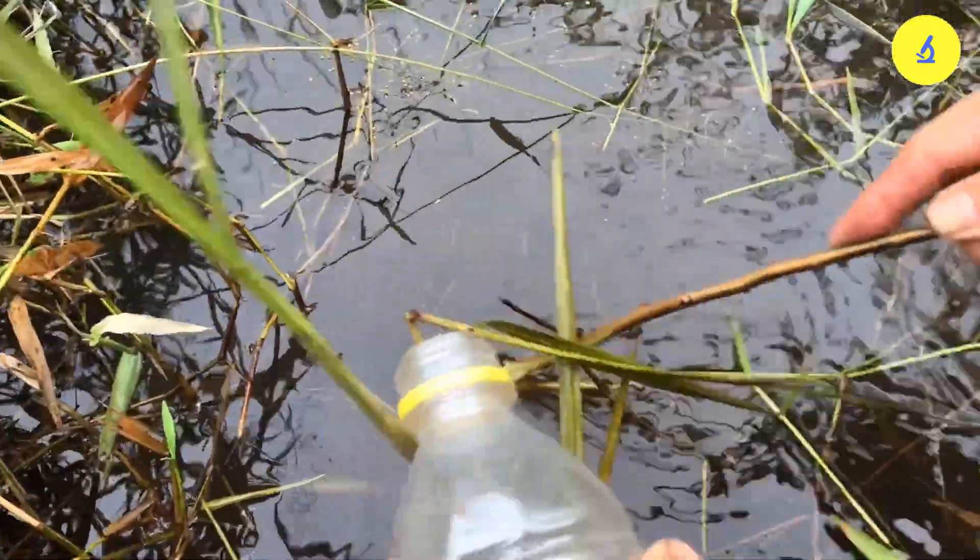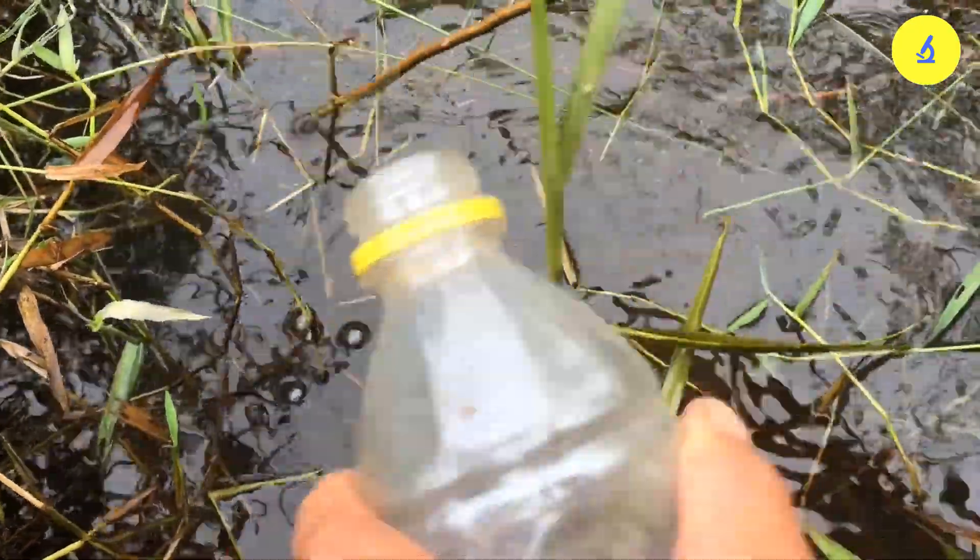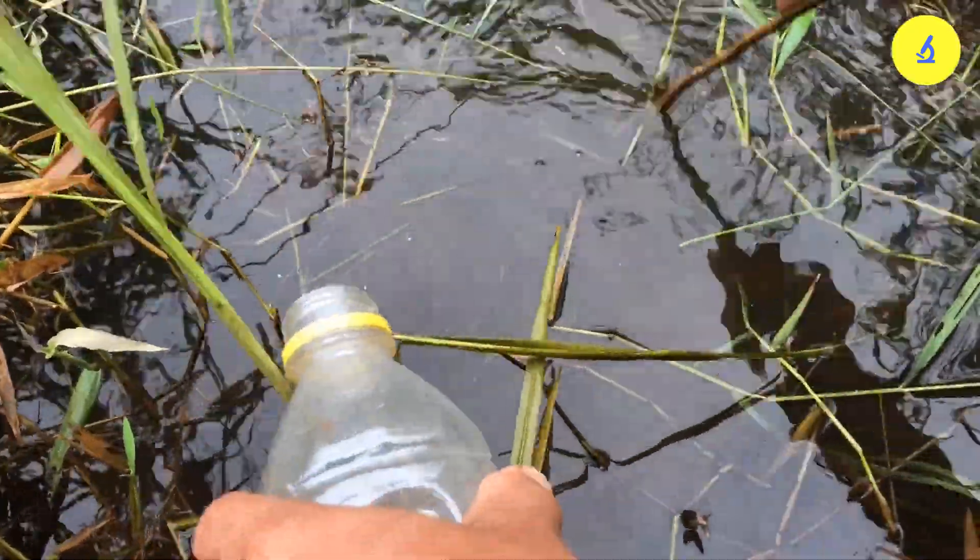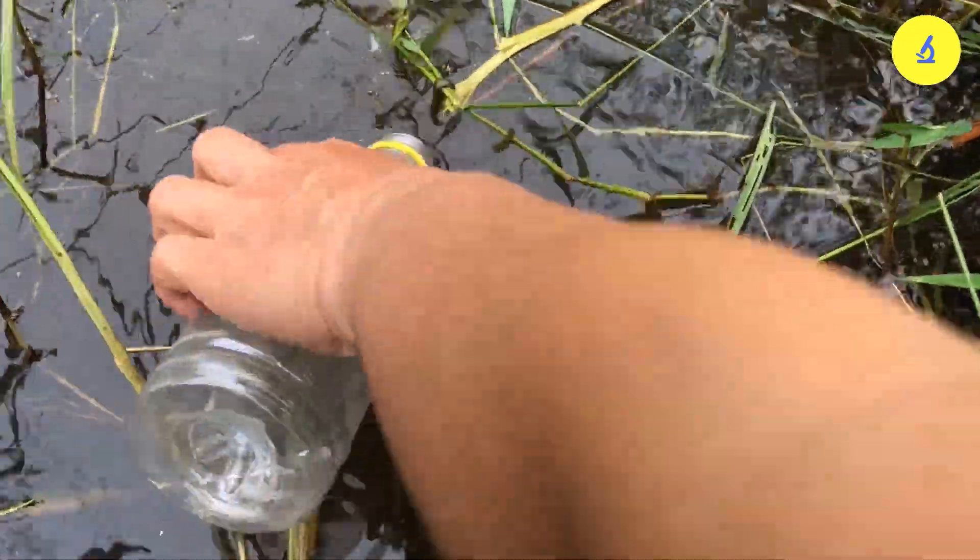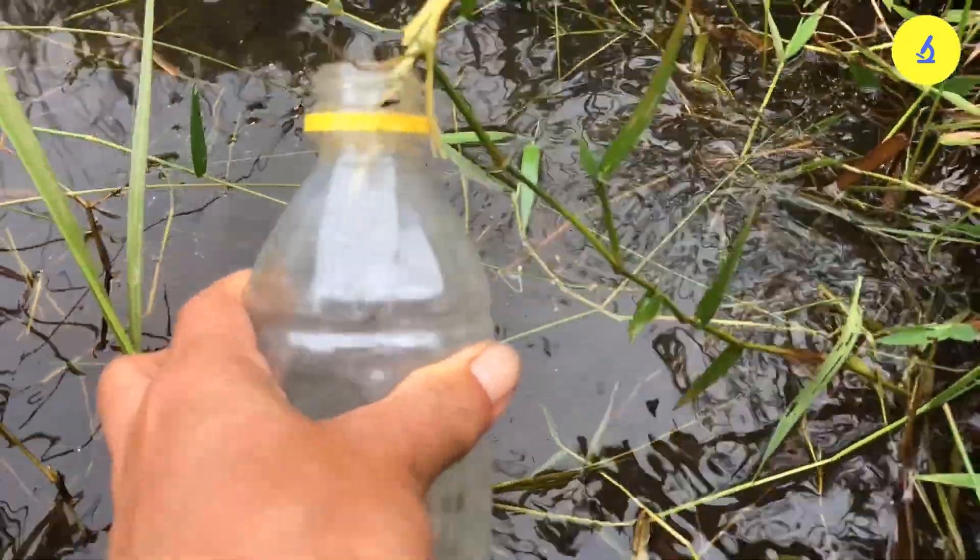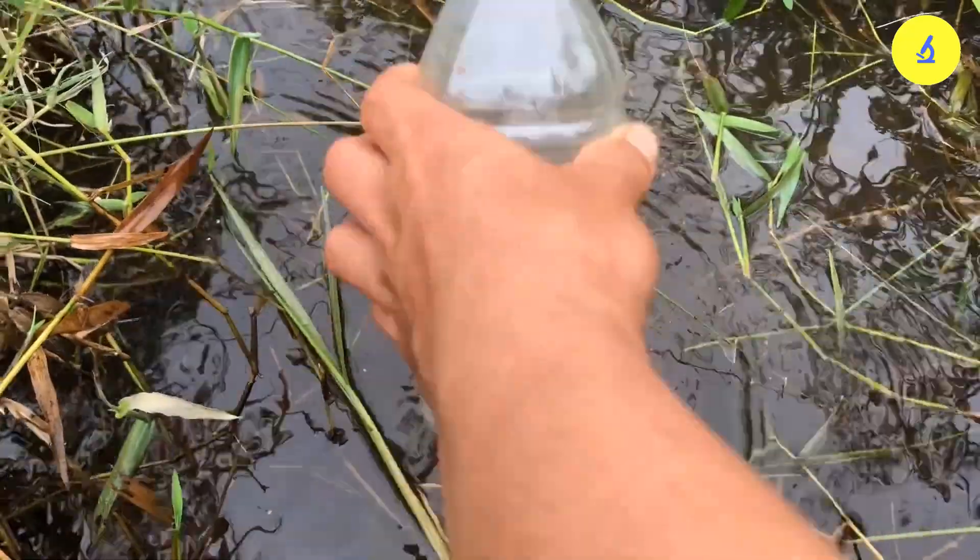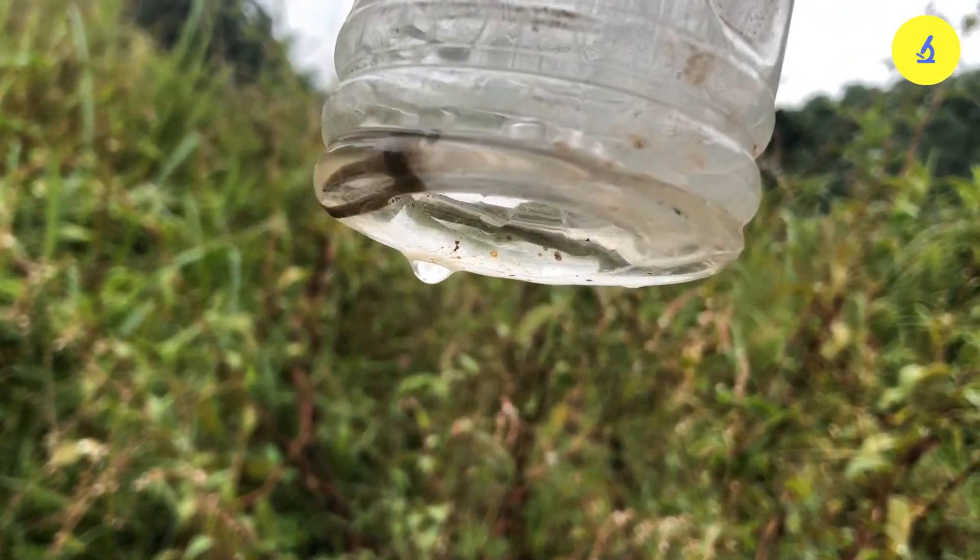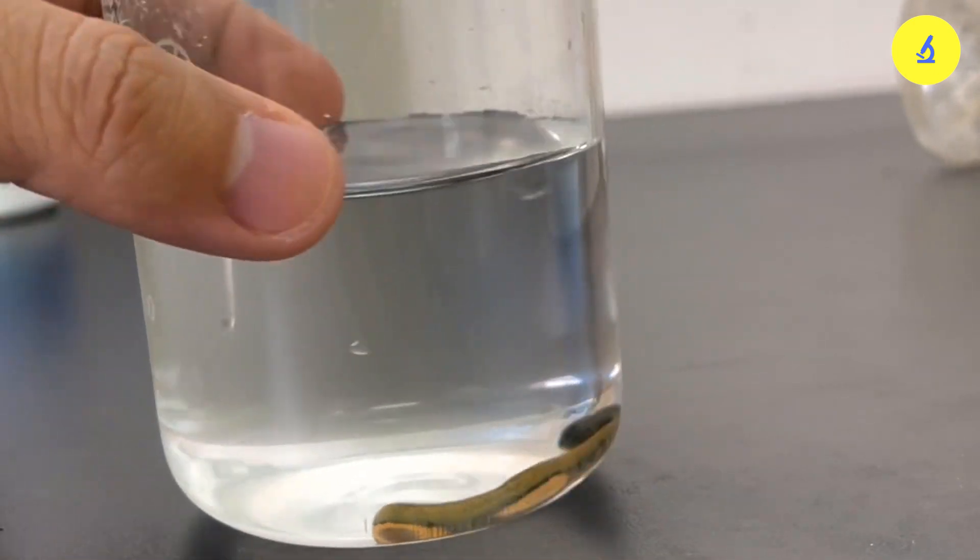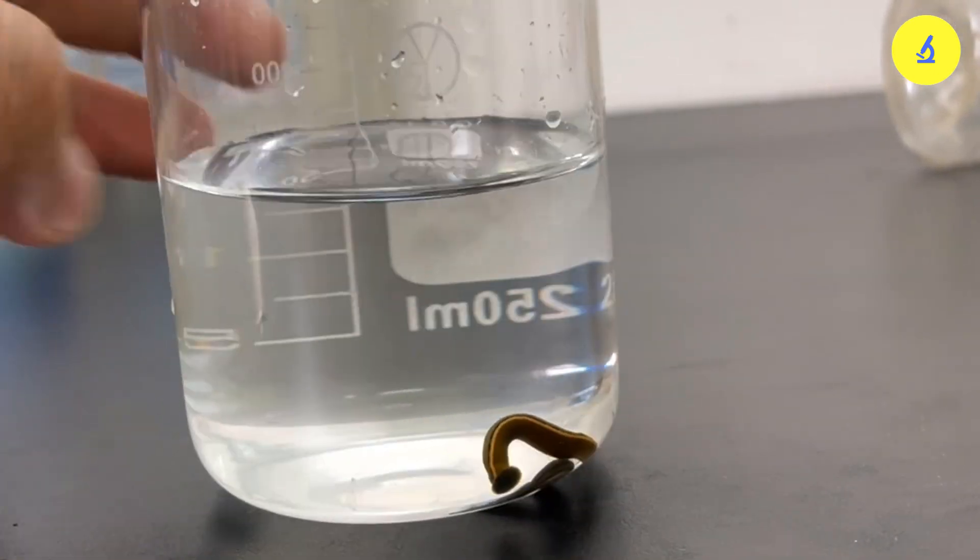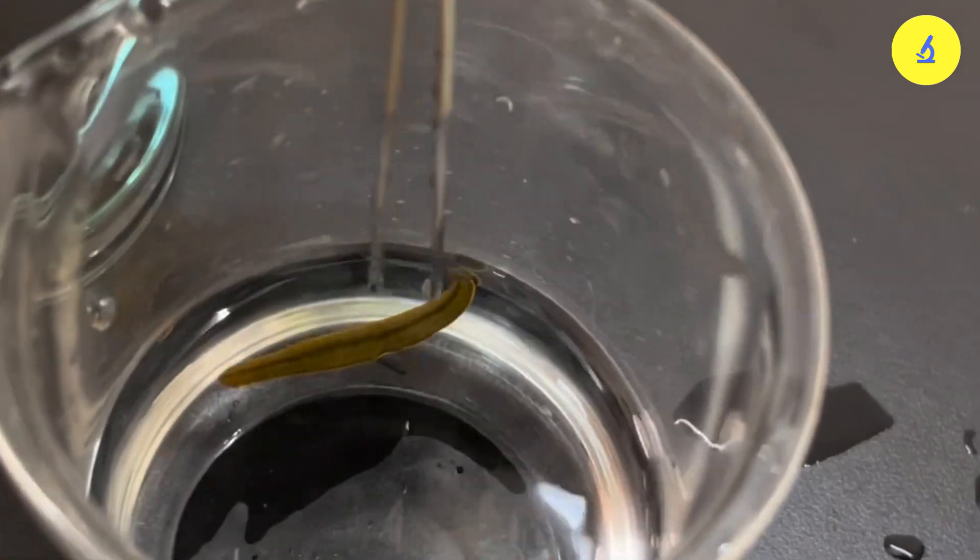They feed on blood or rotting plants, insects, and worms. Look, can you see it swimming? Oh, I'm scared, so I have to ask my mom to help catch it. Wow, my mom is amazing, she caught two of them for us. Now let's go to the laboratory.